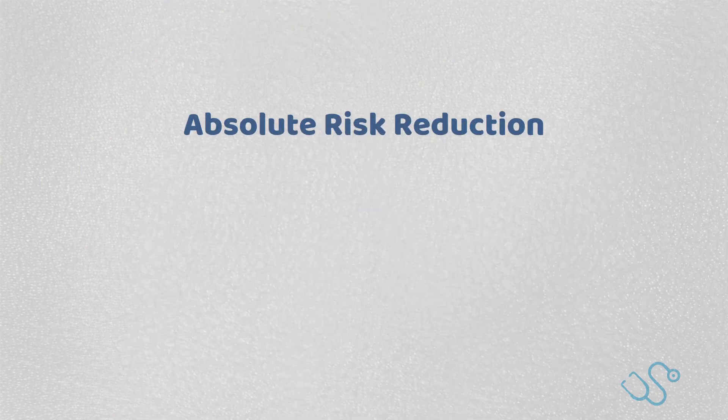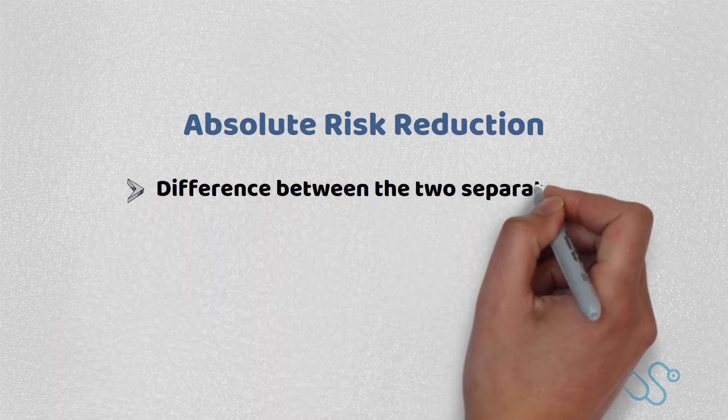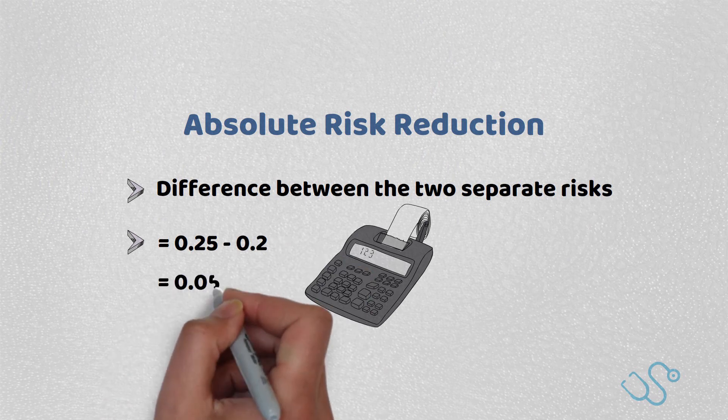Well, what about absolute risk reduction? This is another common exam question. This is easy. It's the difference between the two separate risks. So in this case, 0.25 minus 0.2, which is 0.05.